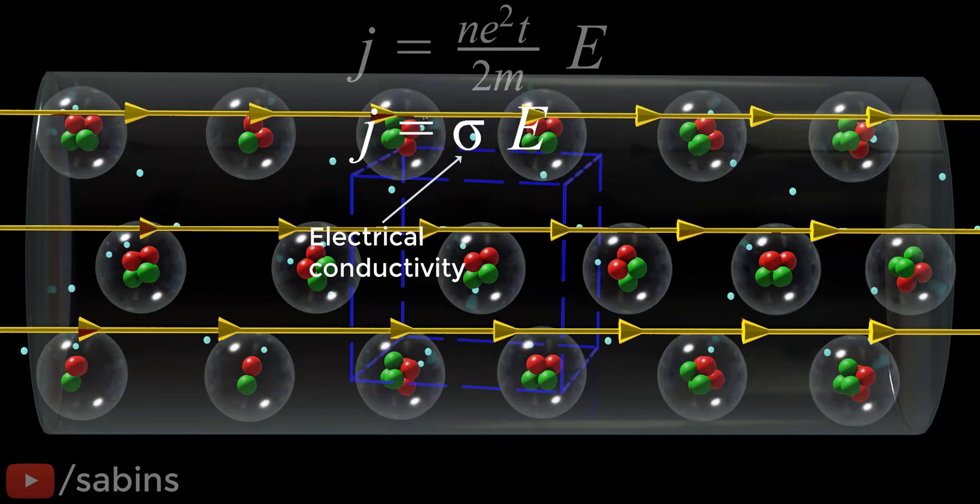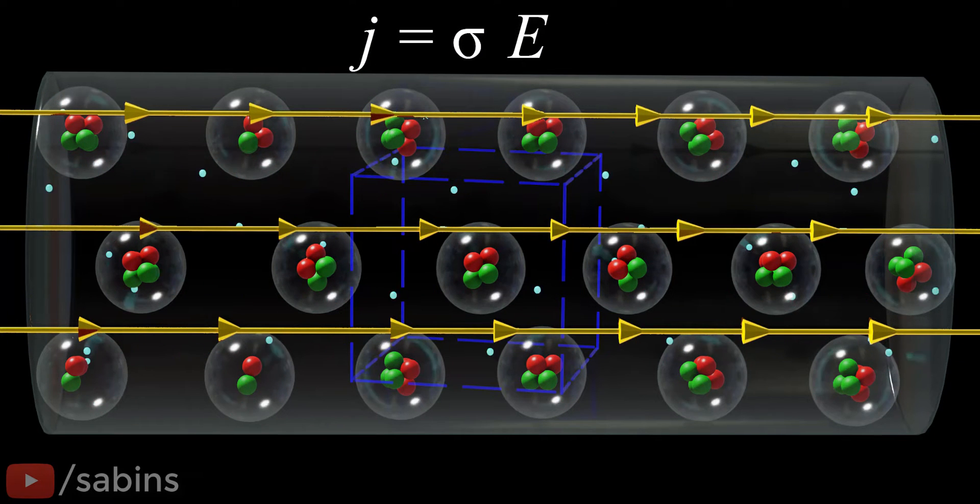This relationship says that the current density is proportional to the electric field value applied across the conductor, which is Ohm's law, exactly.